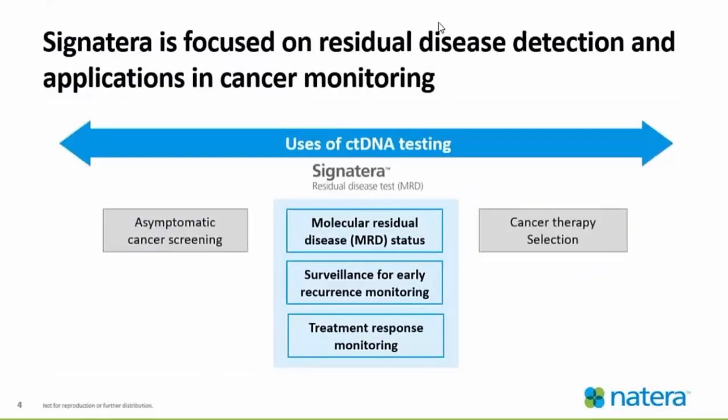Signatera is focused on residual disease detection and applications in cancer monitoring. There is a continuum for the uses of ctDNA testing, and in the middle falls Signatera, which assesses for residual disease. There is a molecular residual disease status that is assessed, as well as surveillance for early recurrence monitoring and treatment response monitoring — showing us if adjuvant therapy is needed or if a therapy is working.